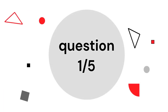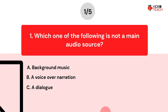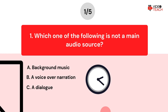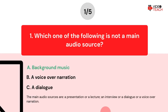Question number one. Which one of the following is not a main audio source? Option A: Background music. Option B: A voice over narration. Option C: A dialogue. The correct answer is option A. The main audio sources are a presentation or a lecture, an interview or a dialogue, or a voice over narration.